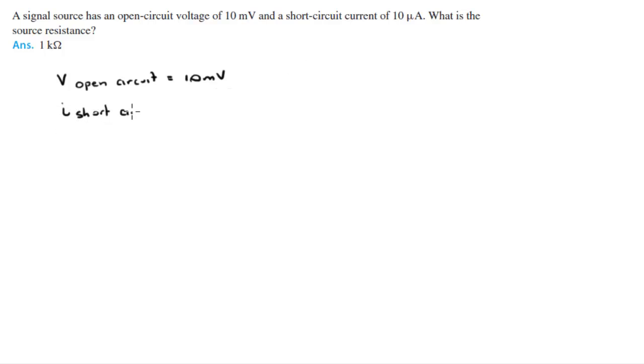Alright guys, a signal source has an open circuit voltage of 10 millivolts, so V open circuit is 10 millivolts, and a short circuit current of 10 picoamps.